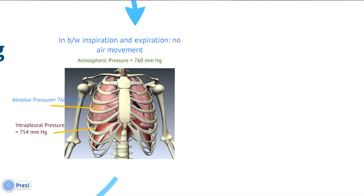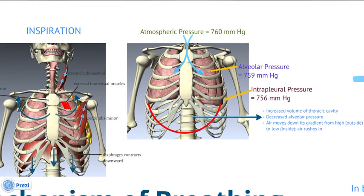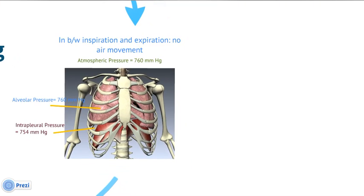Now we're at the point between inspiration and expiration. Air continues to enter until the alveolar pressure equals atmospheric pressure — both at 760. Once the pressures equalize, there is no more air movement, because air requires a pressure difference to move from one container to another.